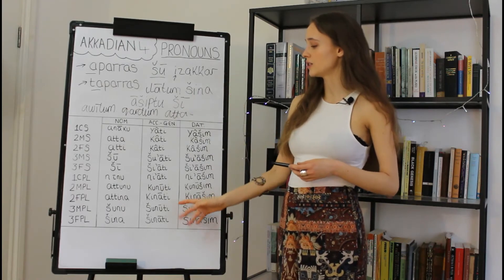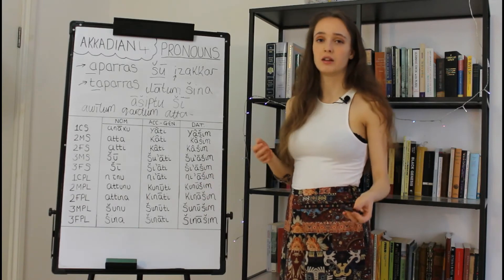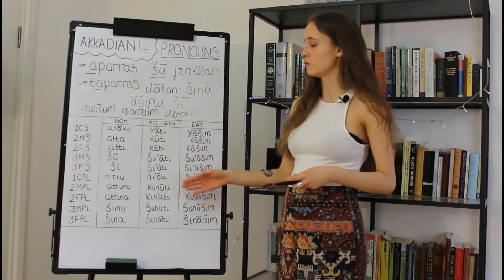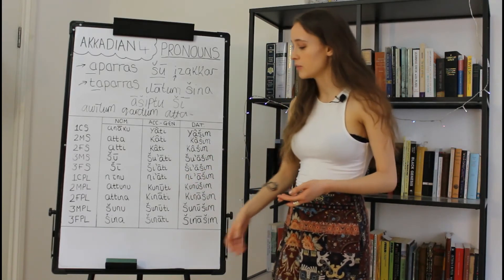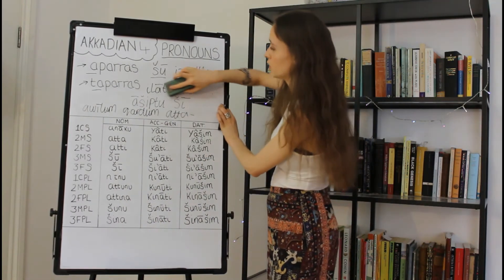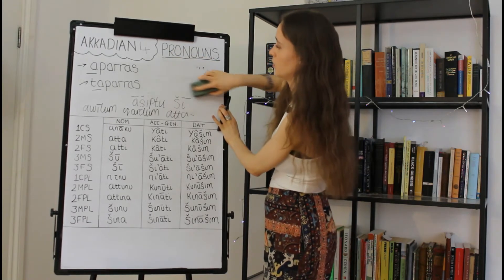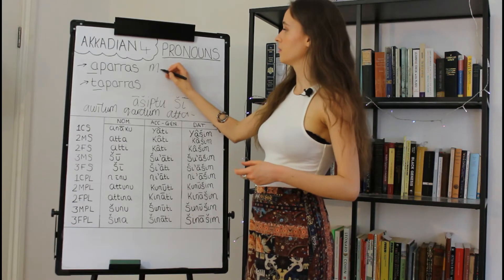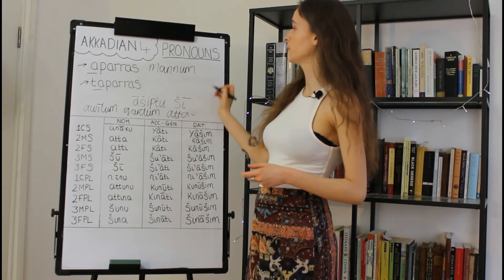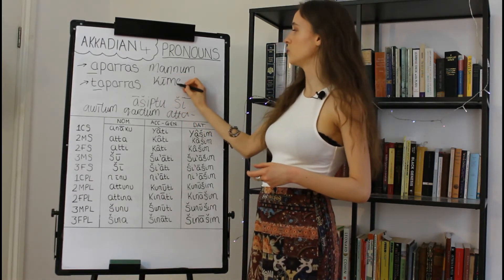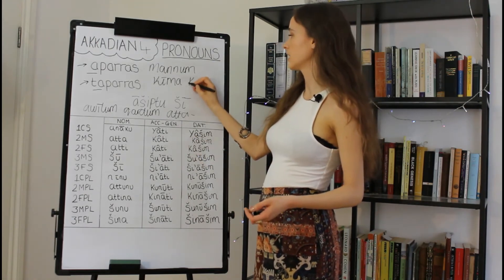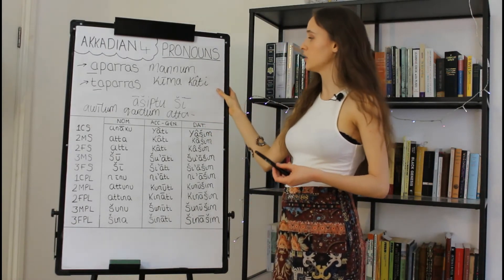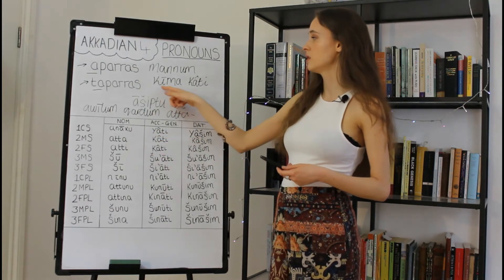Moving on to our accusative-genitive set — this is a multifunctional category in that the pronouns can indicate either accusative or genitive. In practice, you'll almost only see this set used as a genitive following a preposition, since all nouns following a preposition go into the genitive case. For example, 'manum kīma kâti' — 'manum' is the interrogative 'who,' 'kīma' is the preposition meaning 'like' or 'as,' and 'kâti' is the second masculine or feminine accusative-genitive pronoun, translating as 'who is like you.'